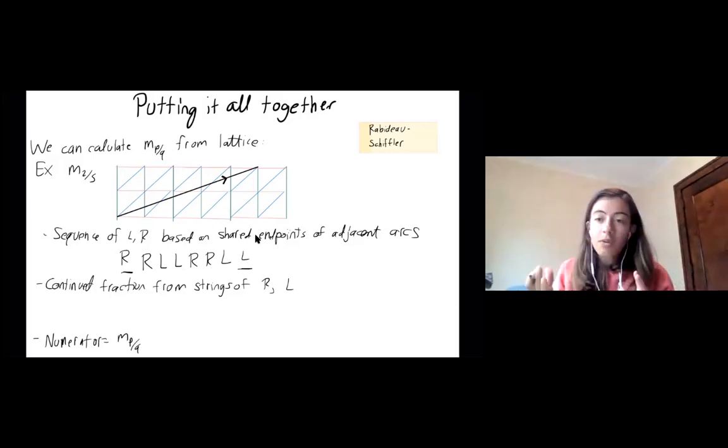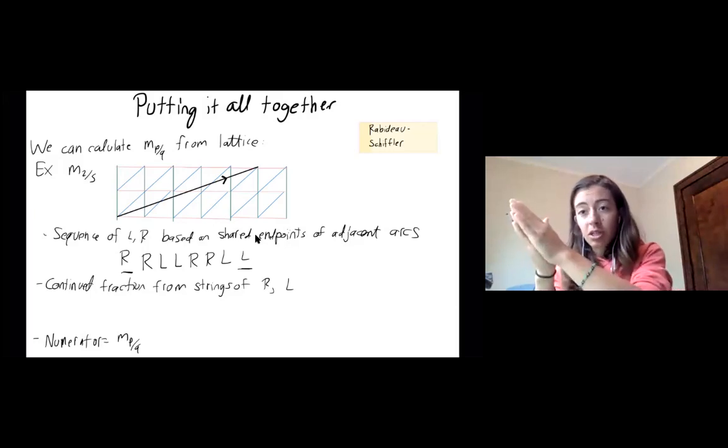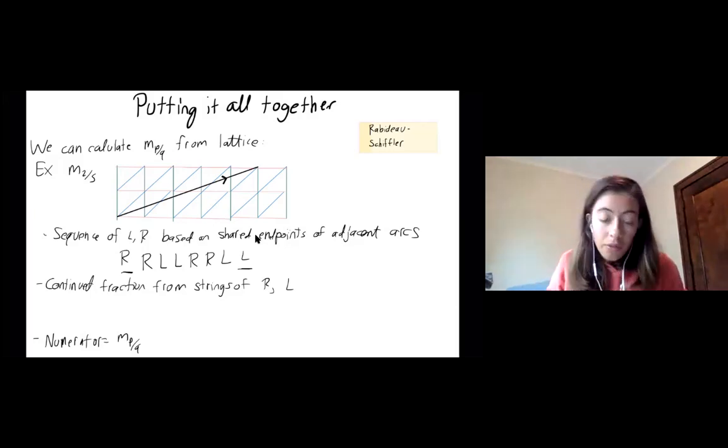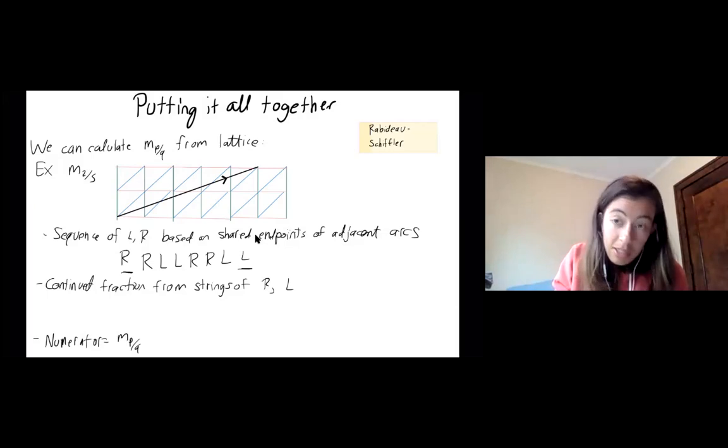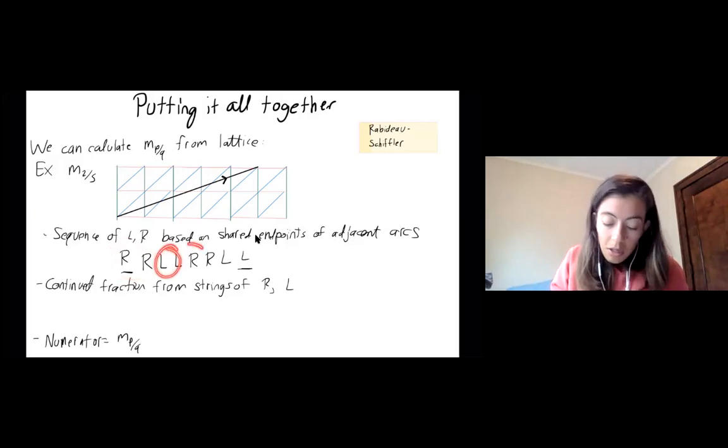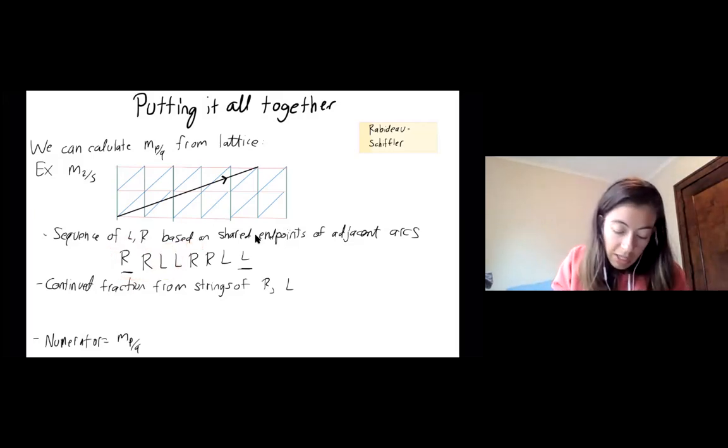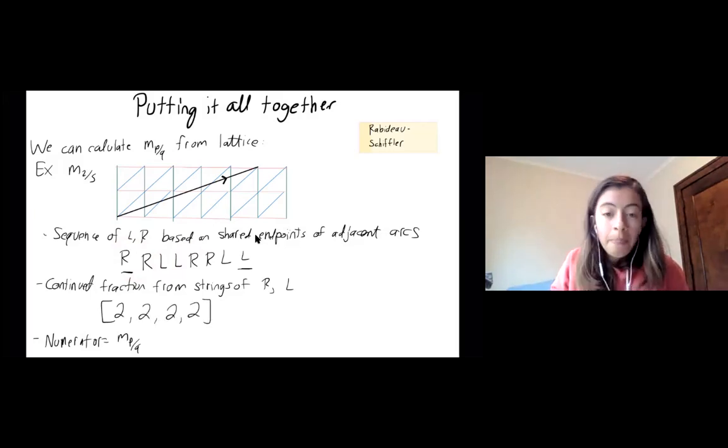Okay, so we have the sequence keeping track of sort of the configuration of the triangulation that this arc is passing through. From there, I'm going to write down a continued fraction. So that's just going to keep track of all the Rs I see, then all the Ls, all the Rs, all the Ls. So conveniently here, each one is two, because I see two Rs and I see two Ls, two Rs, two Ls. So recall a continued fraction is this sort of recursive thing.